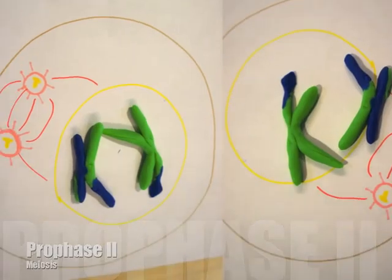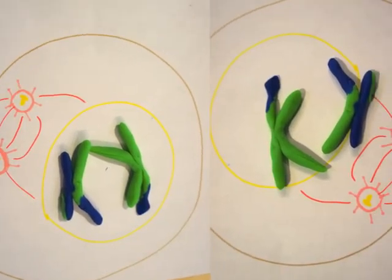Prophase II is the same as in mitosis. Centriole pairs form and move toward the poles, and the mitotic spindle forms.